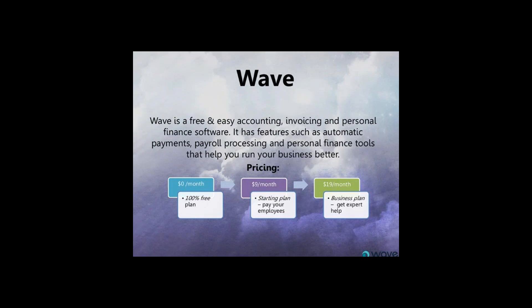Wave is another application available, and its greatest benefit is that it's free. Wave was probably the first application we started recommending because you couldn't beat the price point. However, one of the major downsides to Wave is its ecosystem — the level of third-party applications available for use with it. Xero has the largest third-party application database, followed closely by QuickBooks Online, and Wave is the most limited. They also don't have an open API, whereas the other two do, which is a big differentiator in why there are more add-ons available for the other applications.